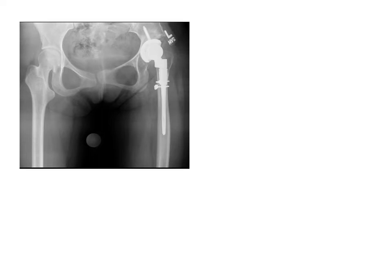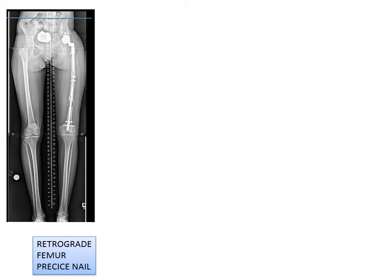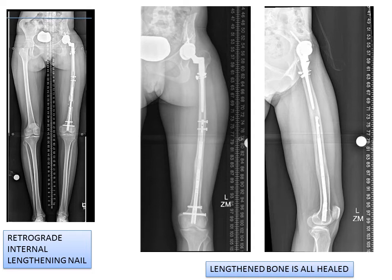After hip replacement, we were able to achieve part of the lengthening, and an analysis after that shows that there's a residual leg length discrepancy of 25 millimeters. The amount of lengthening achieved during hip replacement is constrained by the soft tissue envelope and the sciatic nerve. It's difficult to predict the exact amount of lengthening to be gained with total hip replacement; one can only do it in a safe manner by not overstretching the nerve. The residual leg length discrepancy was treated with a retrograde precise femur nail inserted from the distal aspect of the femur, allowing gradual lengthening of the bone until the leg lengths are equal. The femur healing progressed nicely, and the bone is fully healed.